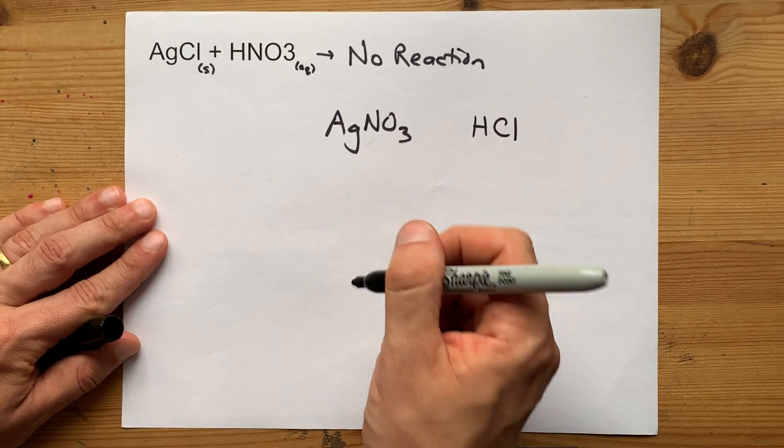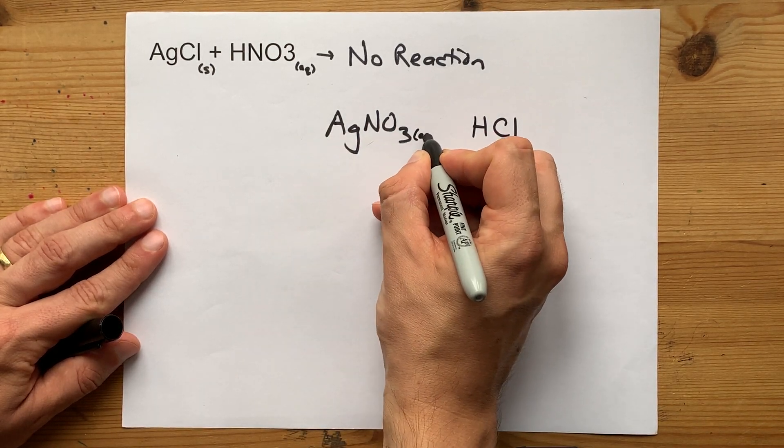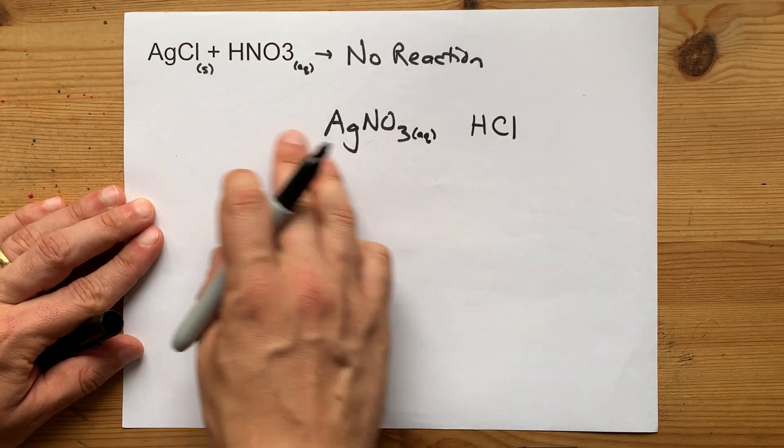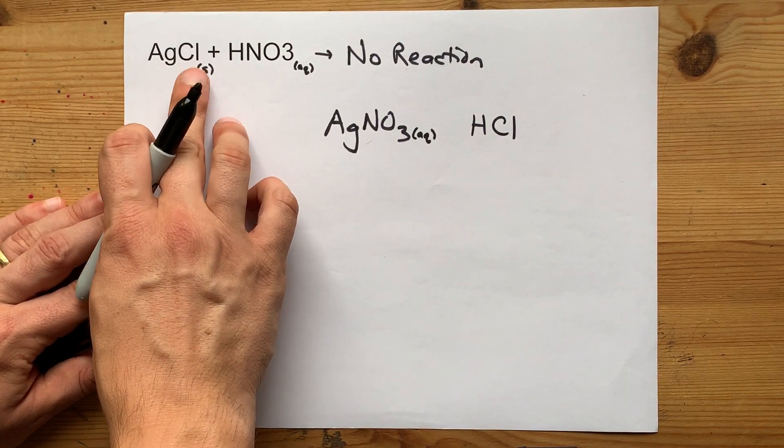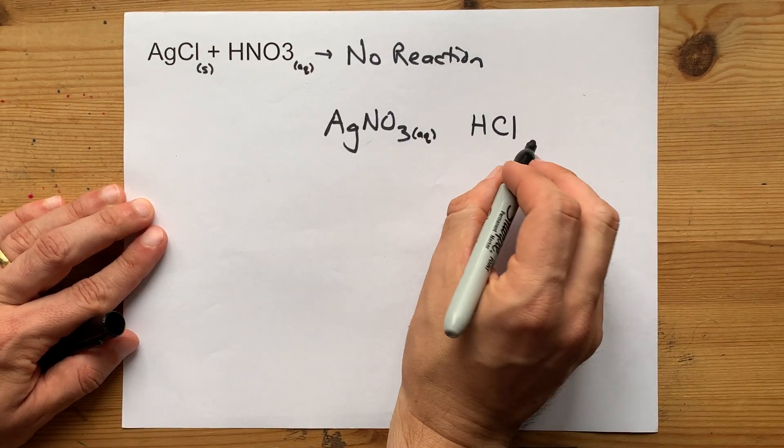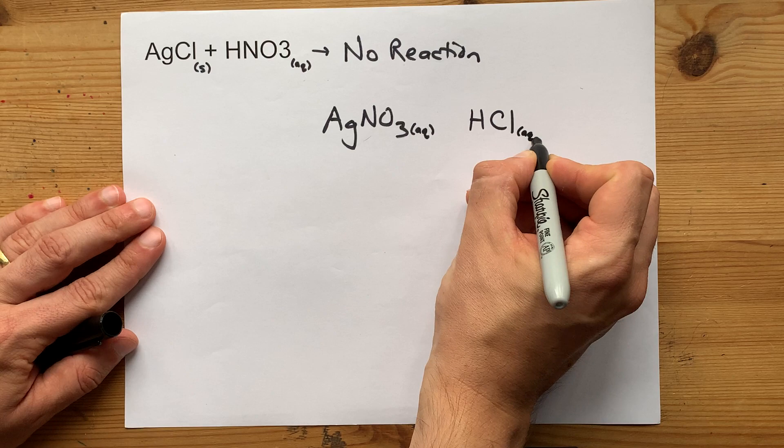But here's the problem. Silver nitrate is soluble in water. You can find that on a solubility table the same way you'd find silver chloride is insoluble or solid. And hydrochloric acid dissolves in water as well.